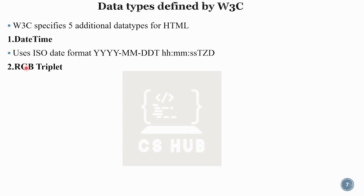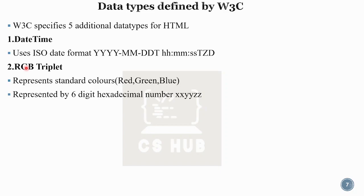The next W3C data type is RGB triplet. In the RGB area, standard colors represent red, green, and blue values. It is represented by a 6-digit hexadecimal number in the format XXYYZZ, where the red value is 2 digits, the green value is 2 digits, and the blue value is 2 digits, giving different color combinations.